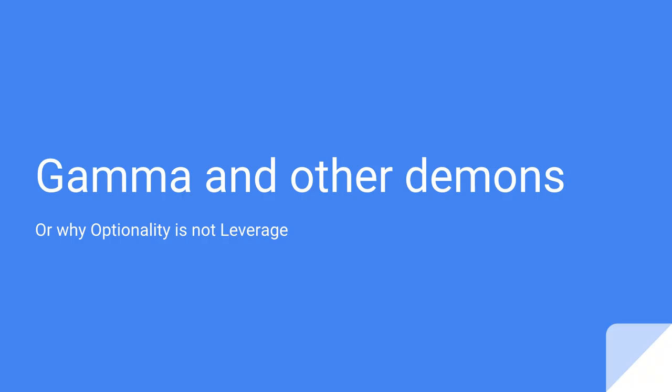Welcome to another one of my video tutorials for the Gamma Optimizer. This one is a simpler one — a tutorial that will cover the concept of Gamma and why I am so obsessed with Gamma in general. The title is 'Gamma and other Demons,' and the subtitle is 'why optionality is not leverage,' which is kind of like the eternal debate.